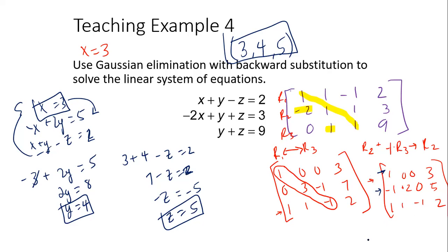This is not true Gaussian elimination all the way through — with Gaussian elimination your goal is to use the matrix entirely to solve the problem. But once you can resort to back-substitution, that's a valid stopping point.